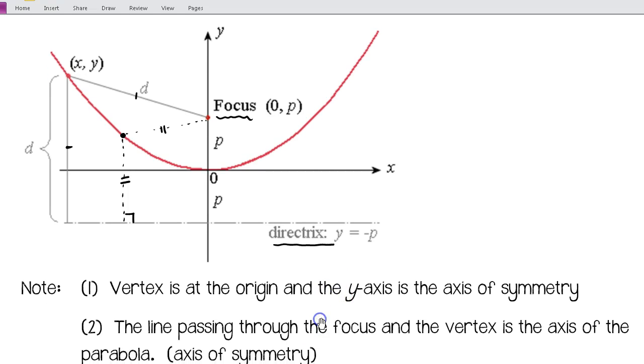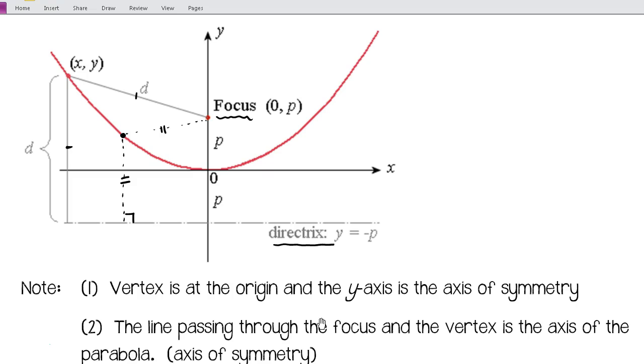Halfway between the focus and the directrix, we're going to have our vertex. And dividing the parabola symmetrically, we've also got the axis of symmetry. So those are the basic parts.